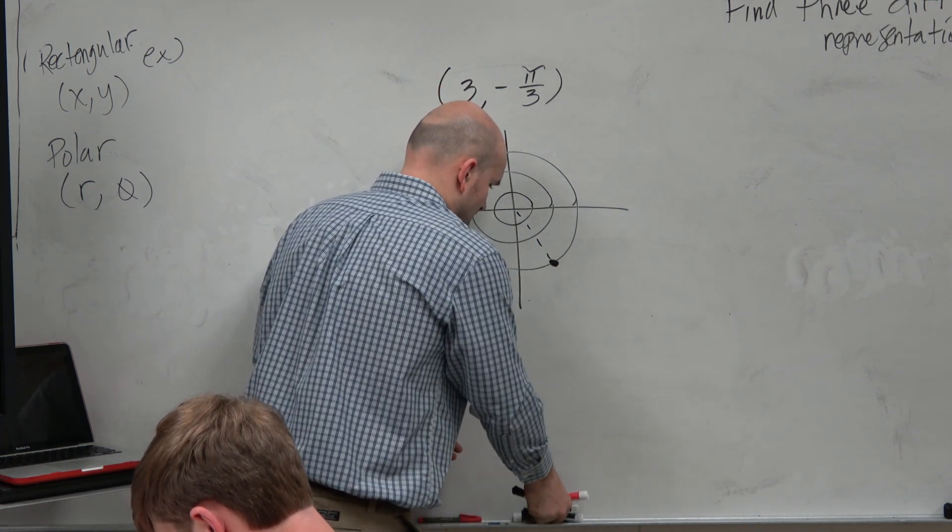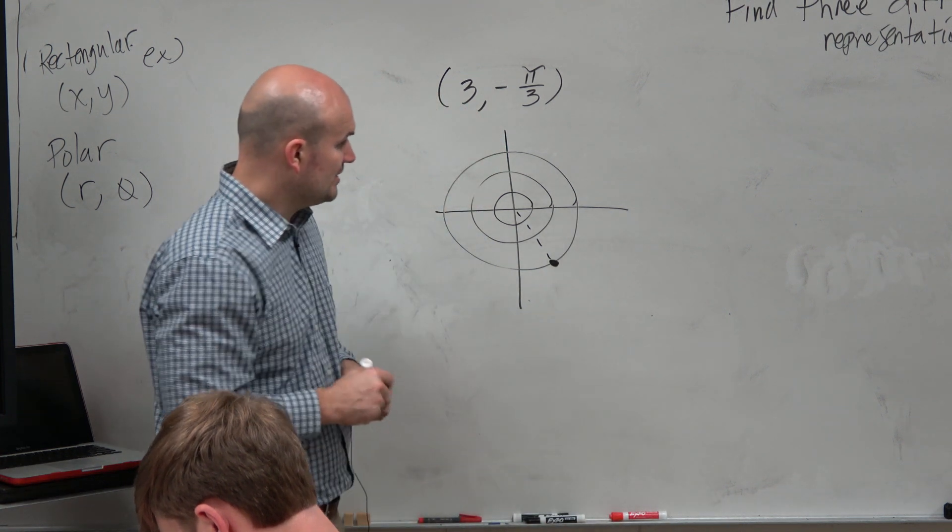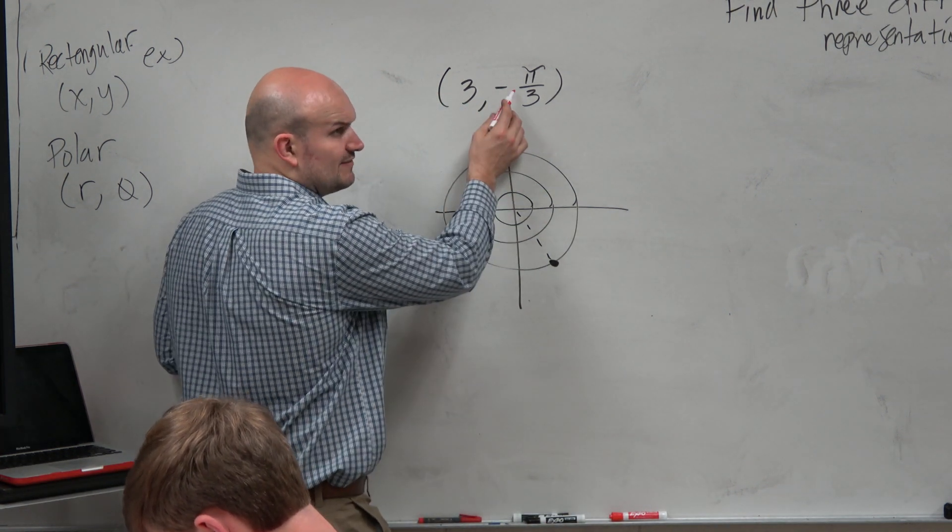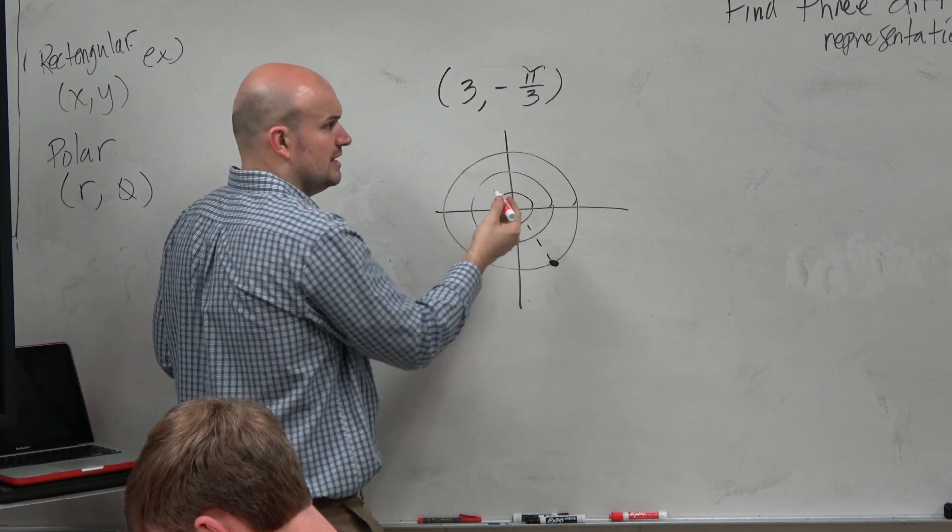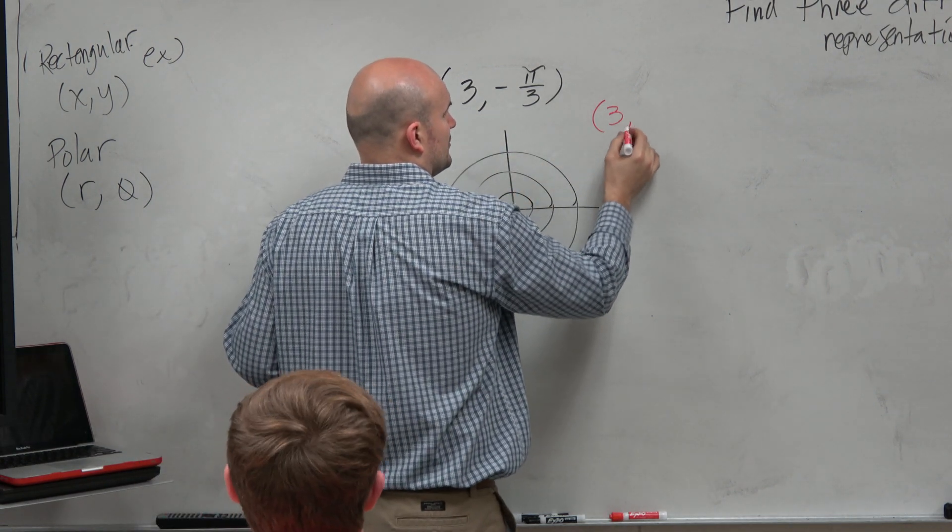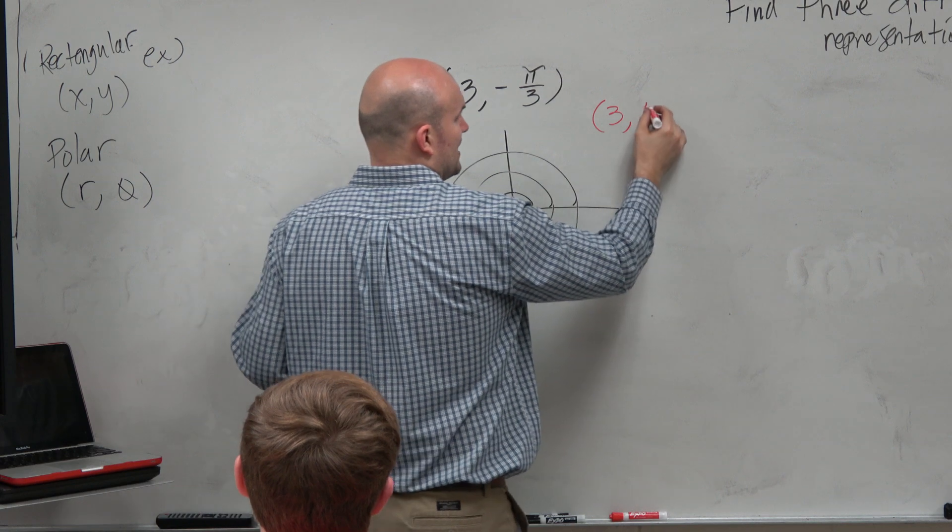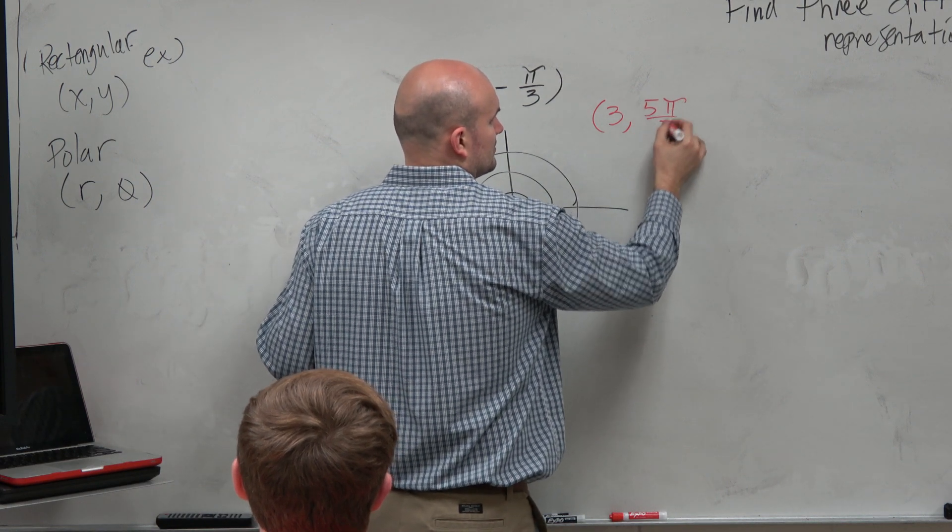Well, one of the ways we could represent it is we did the negative angle. Couldn't we do this as the positive angle? Yeah. Why don't we do 3 comma, let's see, 5 pi over 3. Does that work?